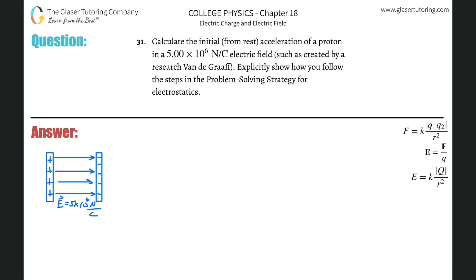Number 31, calculate the initial from rest acceleration of a proton in a 5 times 10 to the 6 newton per coulomb electric field. Explicitly show how you follow Andrew's problem solving strategy.